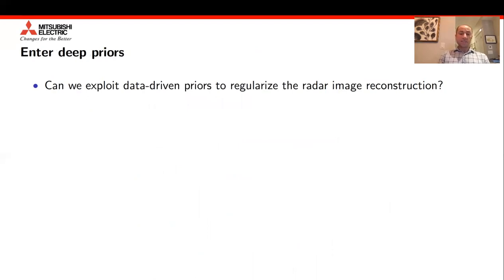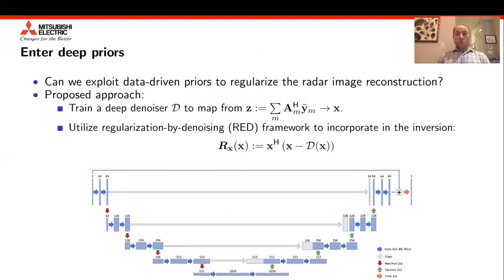In this work, we decided to consider a different type of regularizer for the radar image. Specifically, what if we use deep priors for radar images? One architecture that we adopted is this residual unit architecture, which generally allows us to model identities better. If we pass the back projected image to the input of the unit, we want the unit to learn how to reconstruct the true image. That eventually gives us a denoiser architecture. The way to incorporate this denoiser into the inversion process includes the plug-and-play approach and the regularization by denoising approach, where the regularizer is explicitly modeled as X transpose times X minus D of X, where D is the deep denoiser that we've trained.